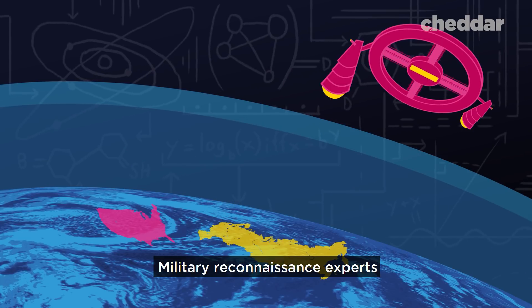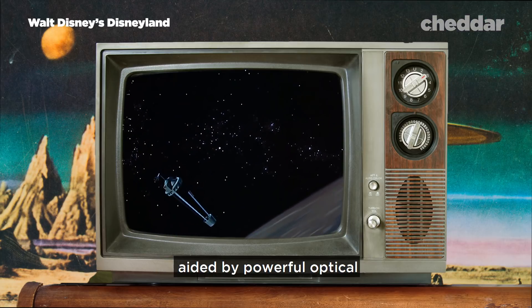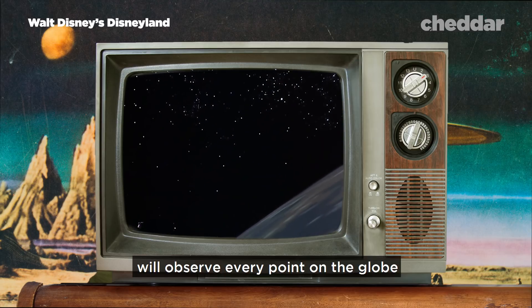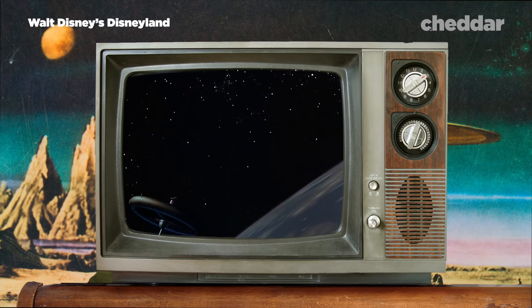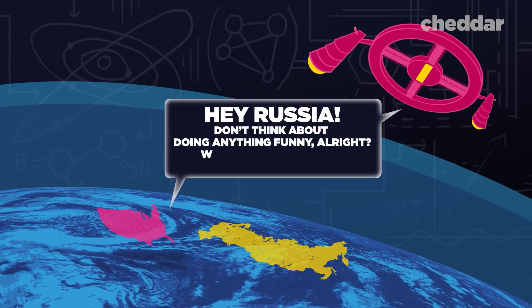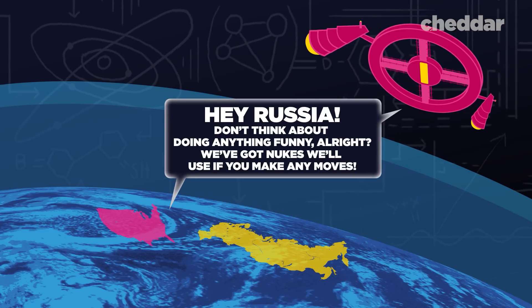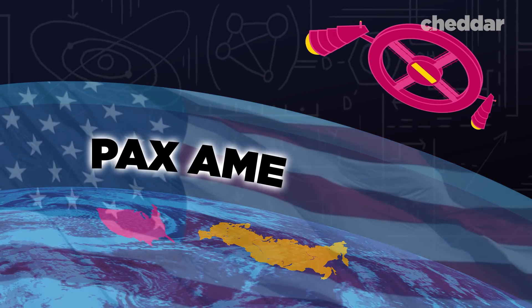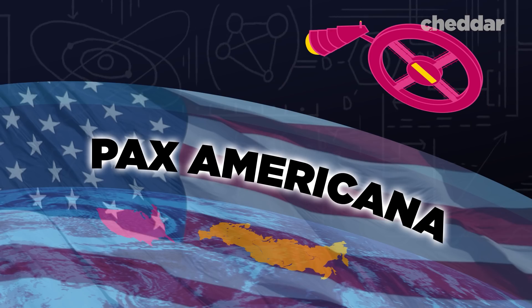Military reconnaissance experts, aided by powerful optical and radar telescopes, will observe every point on the globe. Or, better yet, maybe even let all your adversaries know that preemptive nuclear strikes are on the table, imposing an American-dominated peace, or as von Braun called it, a pax americana, upon the world.